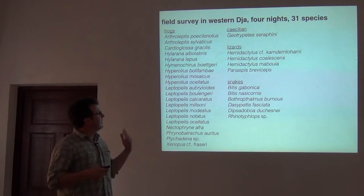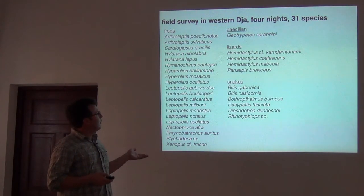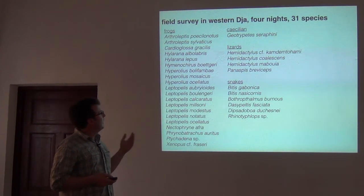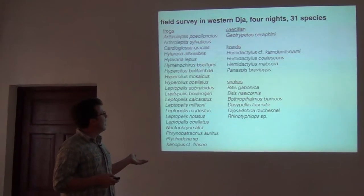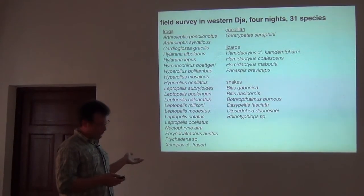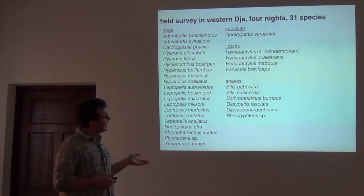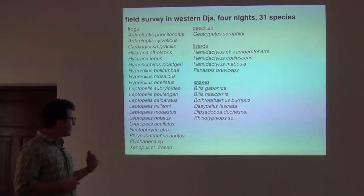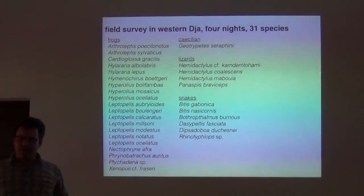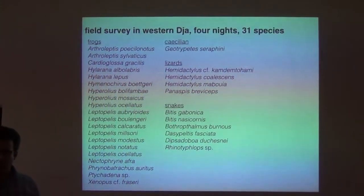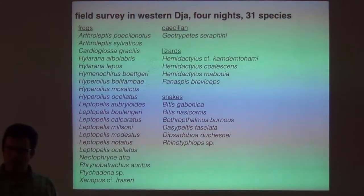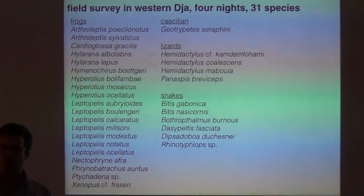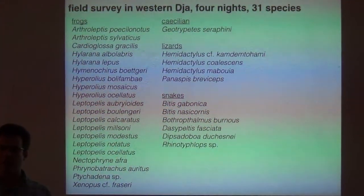Just to give you an idea of the type of diversity we sampled, spending just four nights in the Jha Reserve we came up with 31 species. Most of these, unsurprisingly, are frogs, because that's what I study and what we're spending most effort on. But during the rainy season, frogs are also simply the easiest things to find.